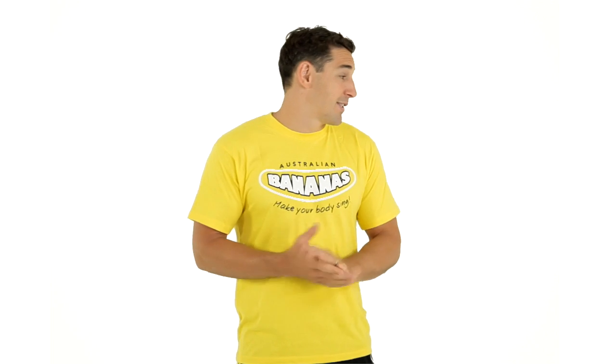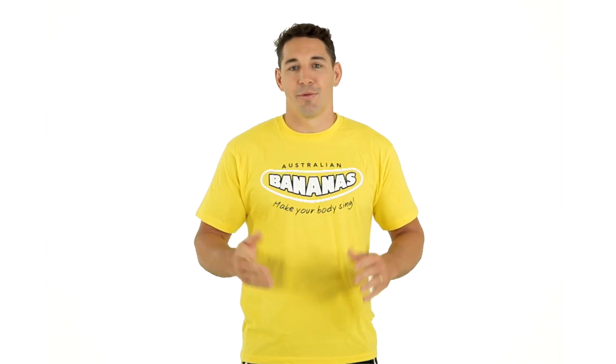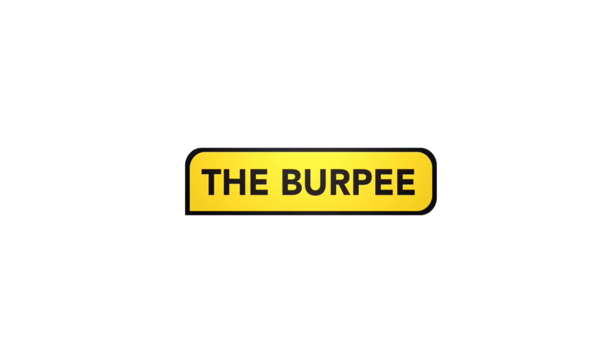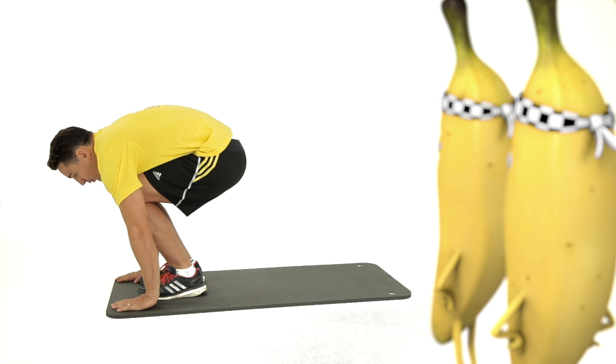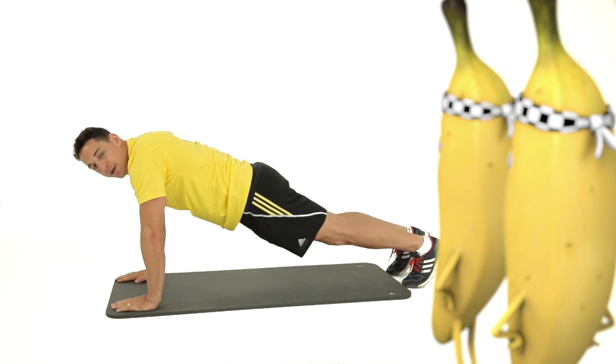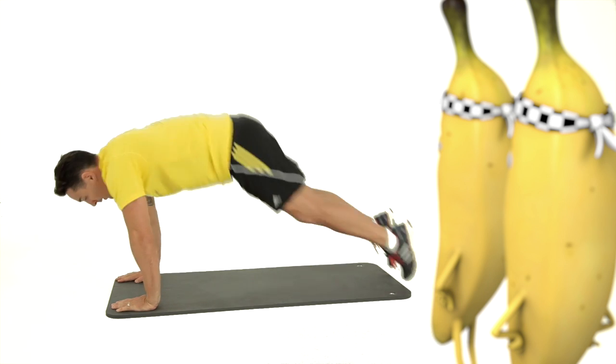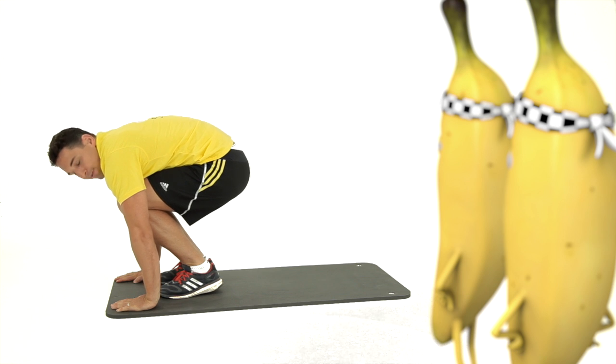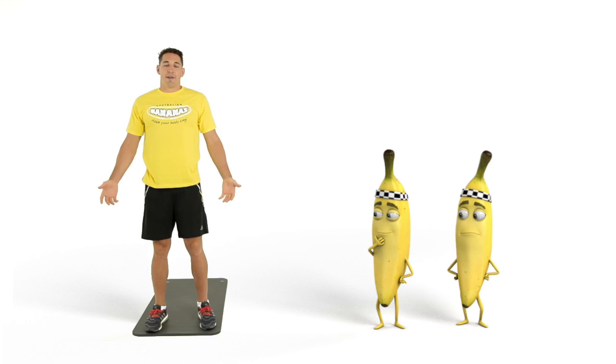Okay, well I'm going to show you some exercises. The first one, we're going to start with a burpee. Crouch down, put your hands on the floor, spring back to a plank position, back to the crouch position and do a jump. Now that's a burpee.